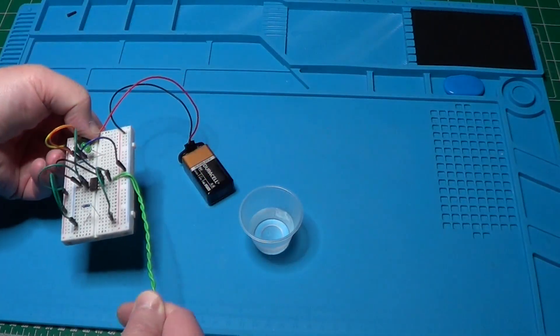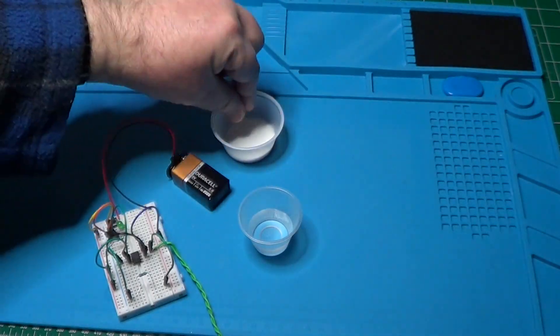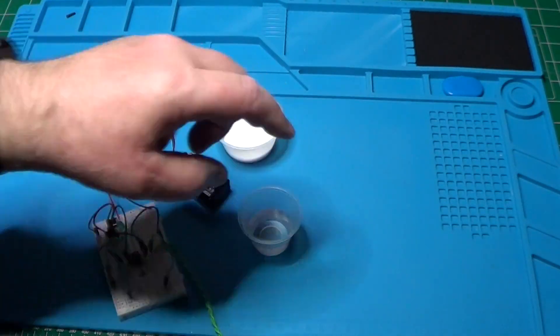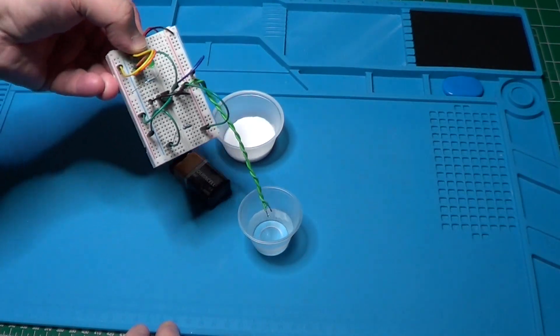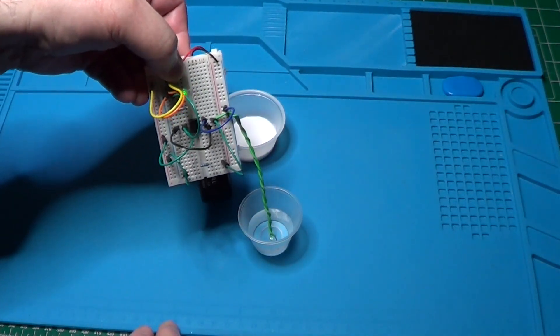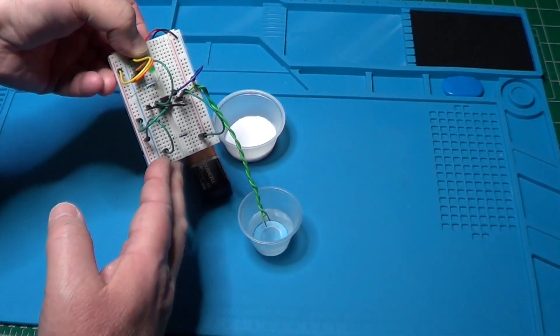However, now we have to check that the sensitivity is not too low. To do that, let me add some salt into the water. Yeah, and now the LED turns on, perfect. The conductivity sensor seems to work fine since it has detected the presence of an ionic compound in the water, the table salt.